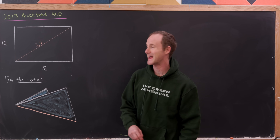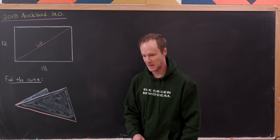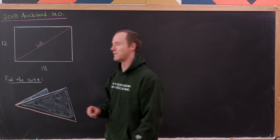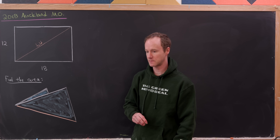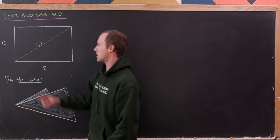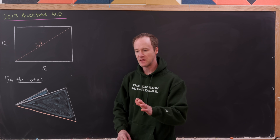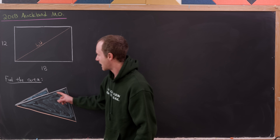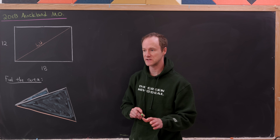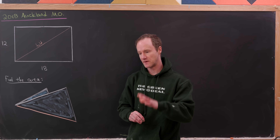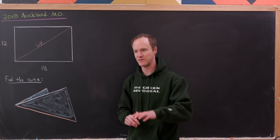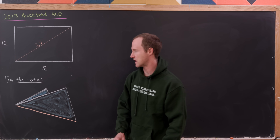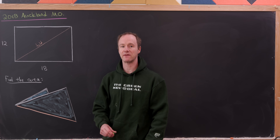Today we've got a problem from the 2018 Auckland Math Olympiad. We have a 12 by 18 sheet of paper and we fold it exactly on the diagonal, then put that shape down flat on a table. Our goal is to find the area that the shape takes up when laid flat — the area of this region right here.